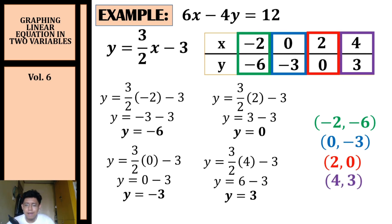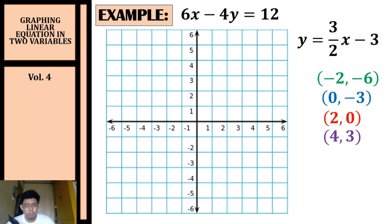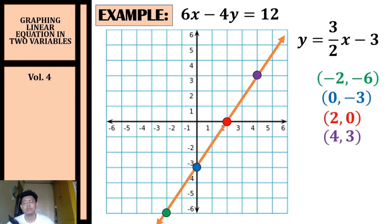Now it's time to plot our coordinates in the rectangular coordinate system. We plot (−2, −6) in the third quadrant, (0, −3) along the y-axis, (2, 0) along the x-axis, and (4, 3) in the first quadrant. Connecting the points gives us the graph of six x minus four y equals twelve.